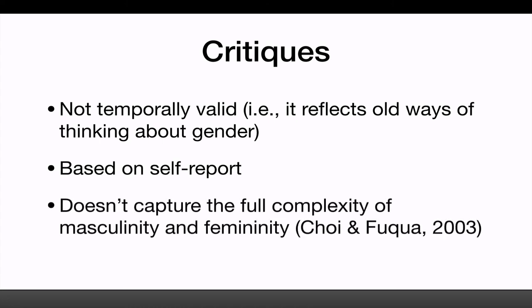Another critique is that the test doesn't necessarily capture the full complexity of masculinity and femininity. These are complex concepts with psychological, social, developmental, and biological properties that you can't really capture in 60 items. Using the Bem Sex Role Inventory in addition to a number of other measures is probably the most valid approach to thinking about masculinity and femininity, rather than solely relying on this one test.